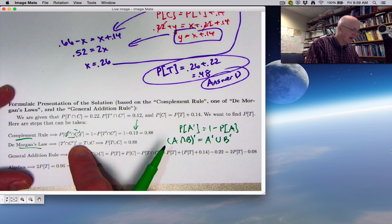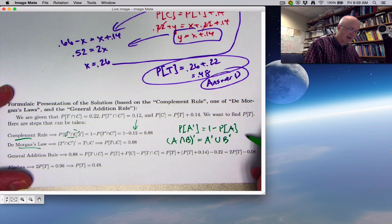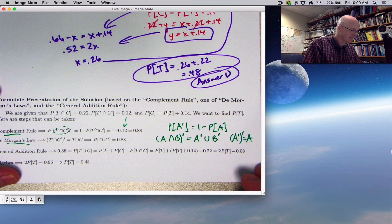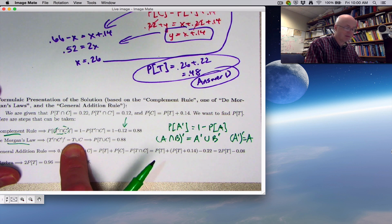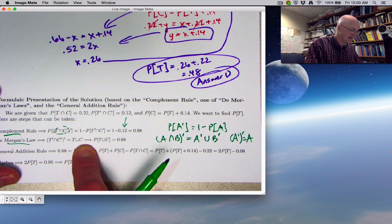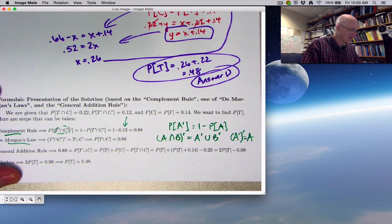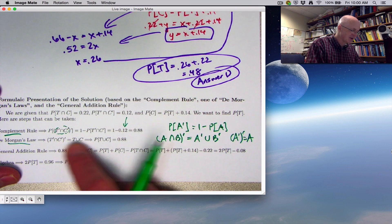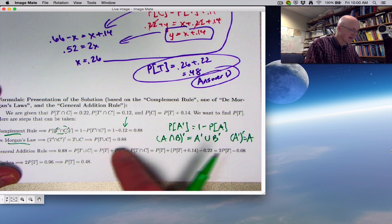I'm applying that here with A being represented by T prime and B by C prime. The prime on the outside goes through the parentheses. I'm also using the fact that the complement of a complement is the original set. T double prime is T, C double prime is C. Notice the intersection changed to a union. Because of that and the previous line, this is true.